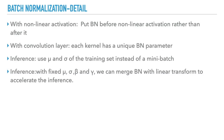Now let me introduce some important details of batch normalization. We put BN before the nonlinear activation rather than after it. With a convolution layer, for each kernel we have a unique BN parameter set. We use mu and delta of the training set instead of the mini-batch during inference. With fixed mu, delta, beta, and gamma, we can merge BN with the linear transform to accelerate inference.